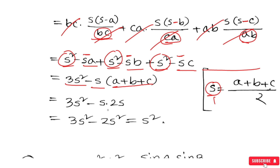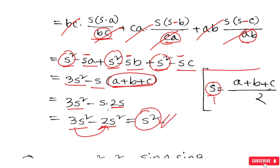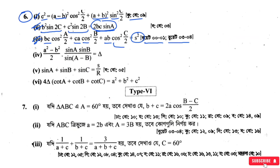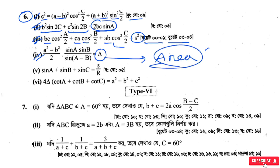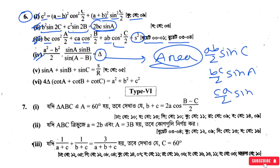2s into (a plus b plus c) — so a plus b plus c equals 2s. That equals 3s squared. At 2s is correct. Finally, the area: delta equals (1/2)·a·b·sin C, which equals (1/2)·b·c·sin A, and equals (1/2)·a·c·sin B.